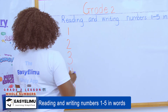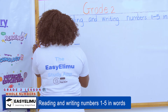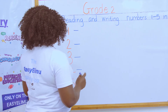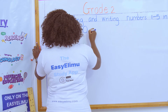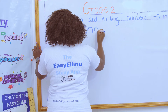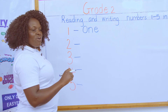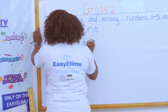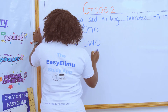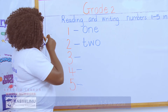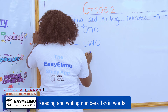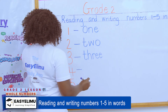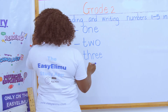Now we want to write these numbers in words. Do you remember how we wrote these numbers in words? Who can spell for us the word for number 1? One is O-N-E. Let's spell number 1: O-N-E. Very good. Then 2 — T-W-O. Let's spell number 2: T-W-O. The next number is 3. Let's spell number 3: T-H-R-E-E.